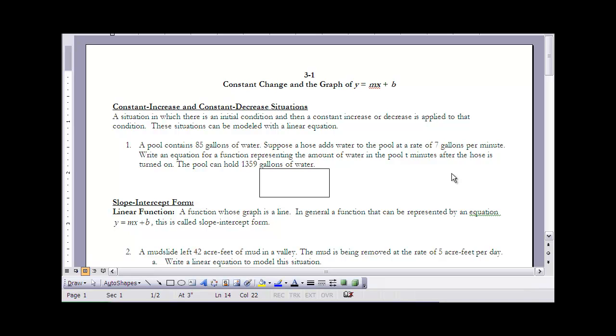So in 3.1 we're looking, actually in all of chapter 3, we're looking at linear equations and linear functions. Something that you studied quite a bit in algebra 1. A lot of chapter 3 is review, but we're going to go a little bit more in depth than you did in your previous algebra course. In 3.1 we're looking at constant change and the graph y equals mx plus b. Definitely something that you spent time with last year. A graph that looks like this in this form.